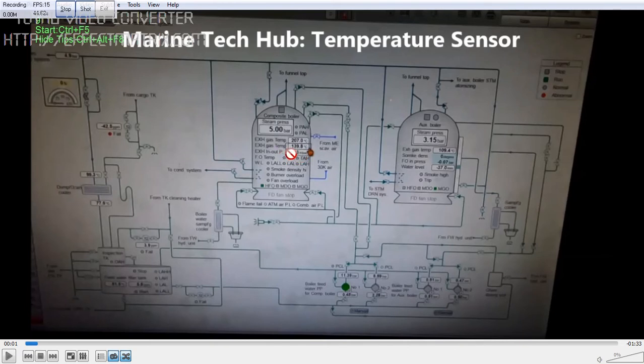So this sensor is of the range 0 to 500 range. So now we want to change the sensor here. So what we are doing is we are changing the sensor of exhaust temperature outlet.